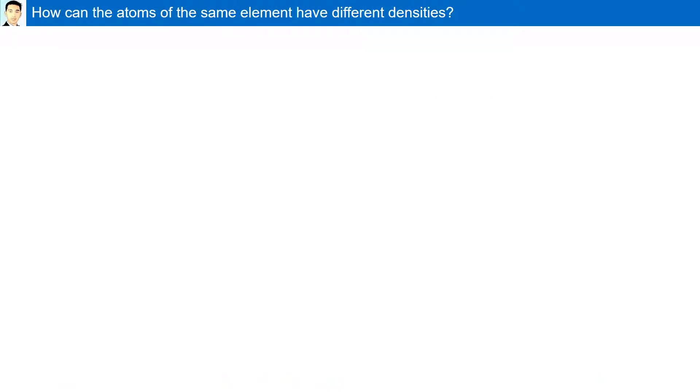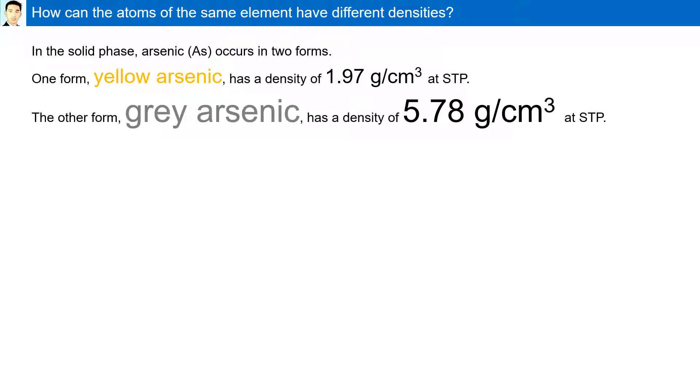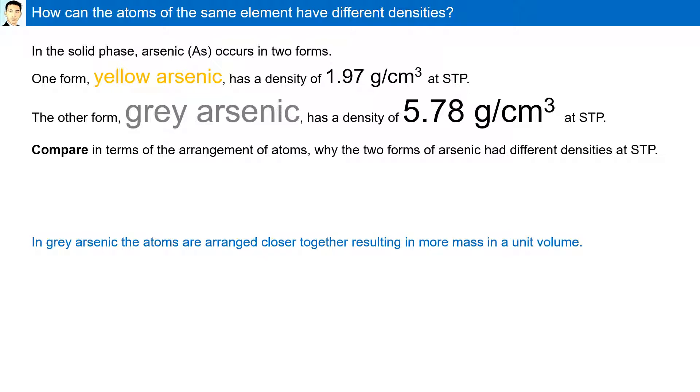How can atoms of the same element have different densities? In the solid phase, arsenic occurs in two forms. One form, yellow arsenic, has a density of 1.97 grams per centimeter cube. The other form, gray arsenic, has a density of 5.78 grams per centimeter cube. Compare in terms of the arrangement of atoms, why the two forms of arsenic have different densities at STP. In gray arsenic, the atoms are arranged closer together, resulting in more mass in a unit volume. Therefore, it has a higher density. Or, we could say the atoms in yellow arsenic are further apart. Therefore, there is less mass per unit volume than in gray arsenic.